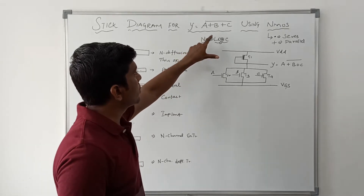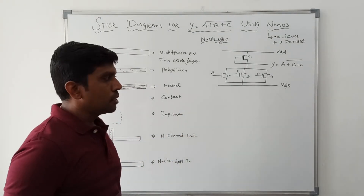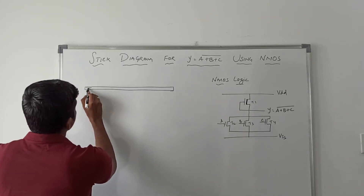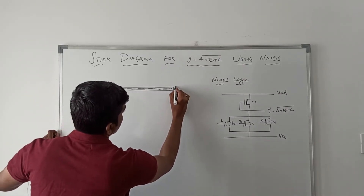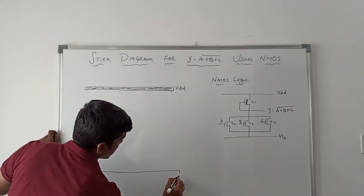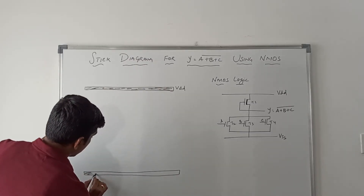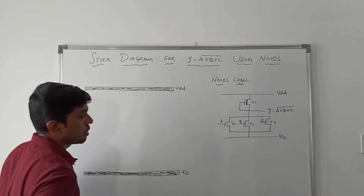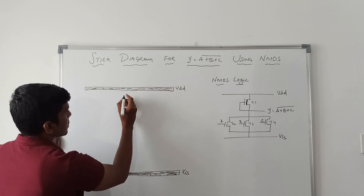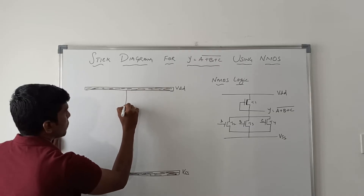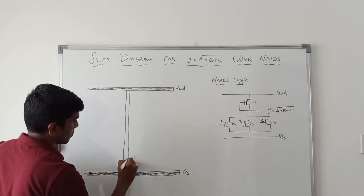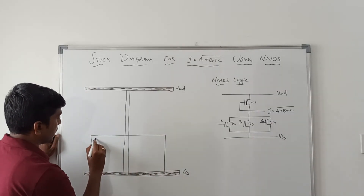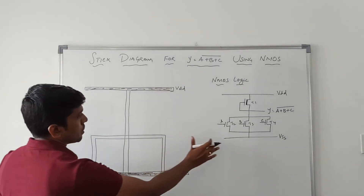This is the NMOS logic for the given Boolean expression. Now I am going to draw the stick diagram. First I draw two metal contacts — the first metal contact connects to VDD and the second metal contact connects to VSS. This metal contact represents the shared rectangular box portion. Between VDD and VSS, I place the N diffusion layer. This structure is based on the logic diagram.